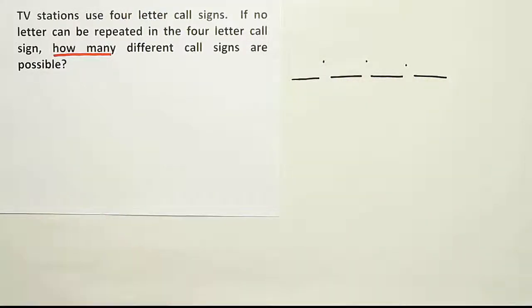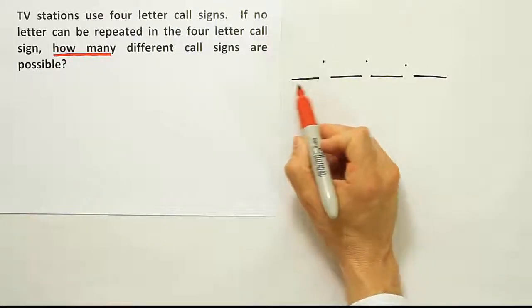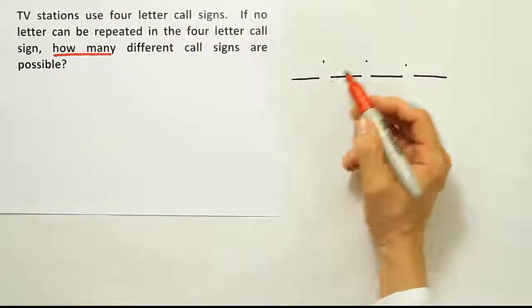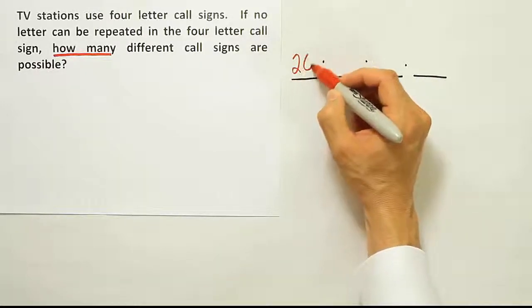All right, now, and if you decide to do that, then all that's left to do is to figure out how many options you have for each decision. Well, when you first come along and you try to form the call sign for your TV station, you will have 26 letters to choose from for the first letter because there are 26 letters in the alphabet.